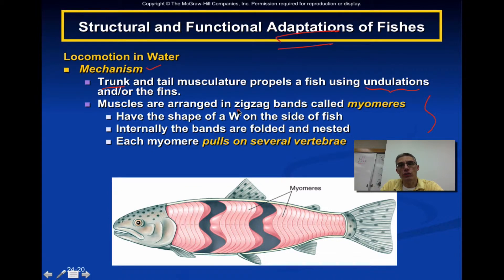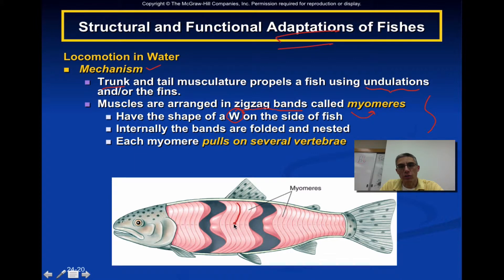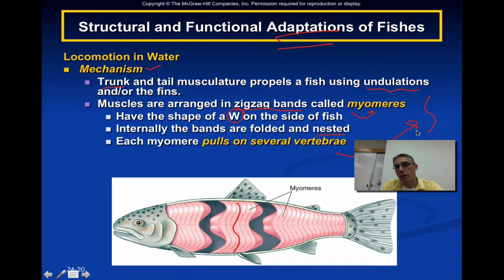When you look at the muscles of the fish, they're situated in a zigzag type of band or pattern. We give a special name to those muscles — we call them myomeres — and they typically have a W shape on the side of the fish. Part of your lab when dissecting the perch will have you remove some scales and observe that W-shaped nature of those muscles. Internally, these bands are folded and nested on top of each other, and each myomere pulls on several of the vertebrae, producing the undulations in the fish's movement.